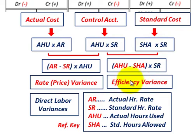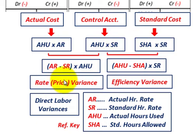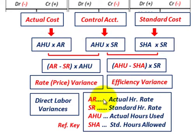To understand the structure: the efficiency variance is the difference between the control account and our standard cost. And our rate or price variance is the difference between our actual cost and our control account. That's how direct labor variances work.